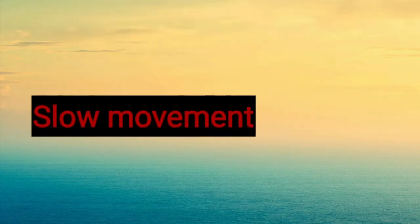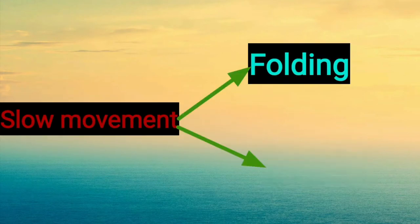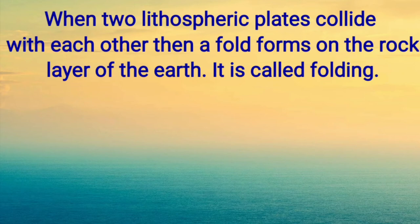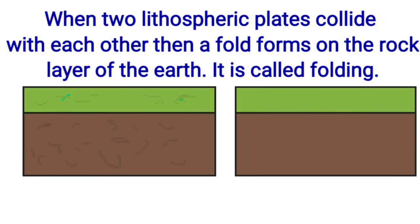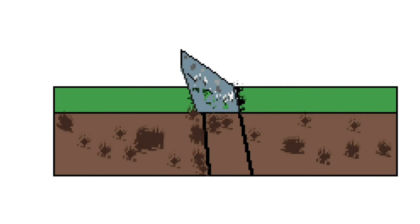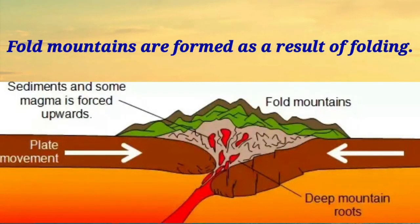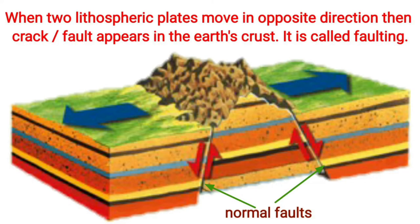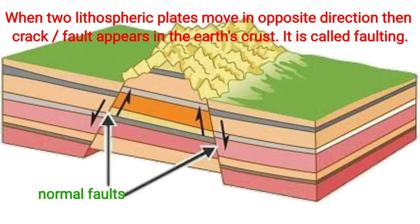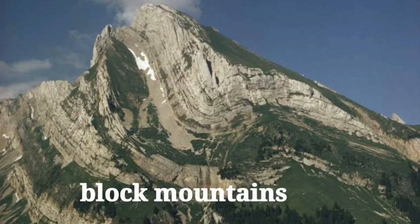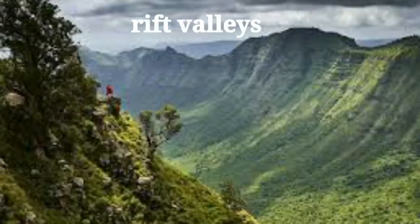Slow movement causes folding and faulting. When two lithospheric plates collide with each other, a fold is formed in the rock layer of the earth — this is called folding. Fold mountains are formed as the result of folding. When two lithospheric plates move away from each other, a crack called a fault forms in the earth's crust — this is called faulting. Block mountains and rift valleys are formed as a result of faulting.